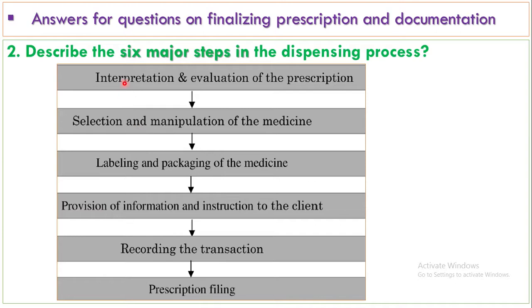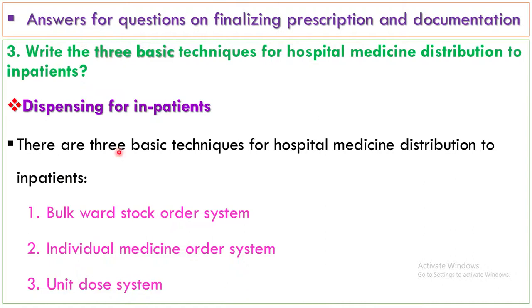The second question describes the six major steps in the dispensing process, which we have discussed. The first is: interpret and evaluate the prescription. The second is: select and manipulate the medicine. The third is: labeling and packaging the medicine. The fourth is: provision of information and instruction to the client. Then recording the transaction. After that, you have to follow up with the patient.